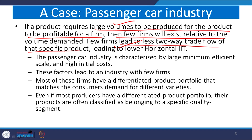The passenger car industry is characterized by large minimum efficient scale and high initial cost, and these factors lead to an industry with few firms. Most of these firms have a differentiated product portfolio; their products are often classified as belonging to a specific quality segment within the passenger car industry. This leads to very few firms, which is a matter of concern for understanding lower horizontal intra-industry trade.